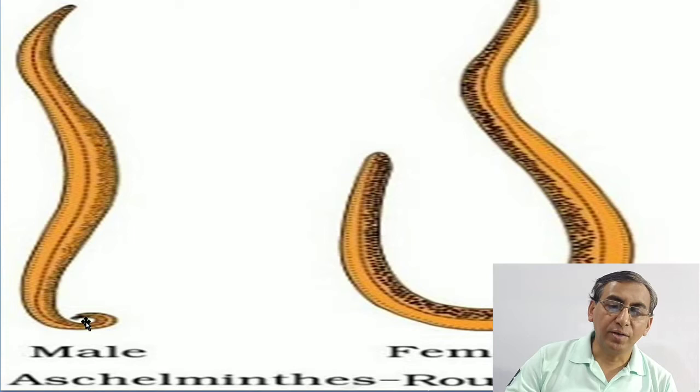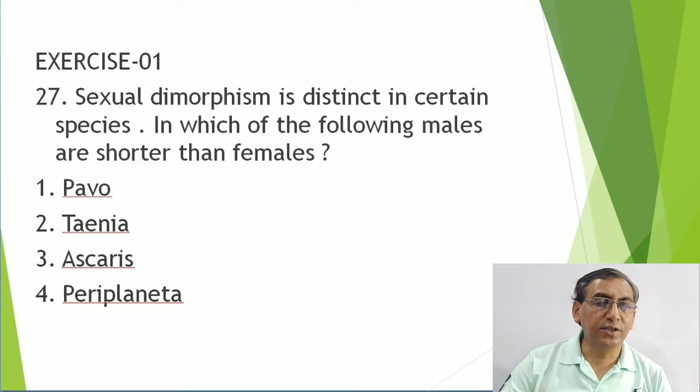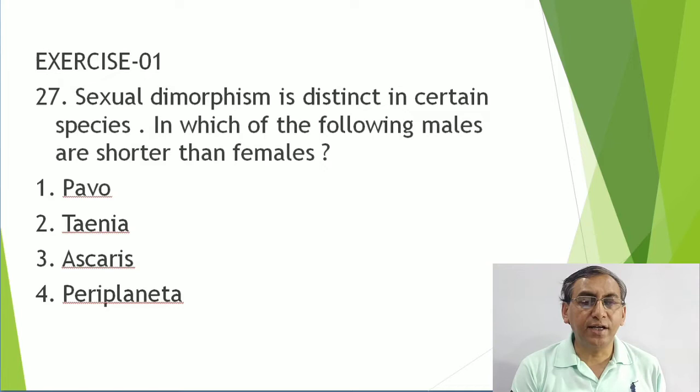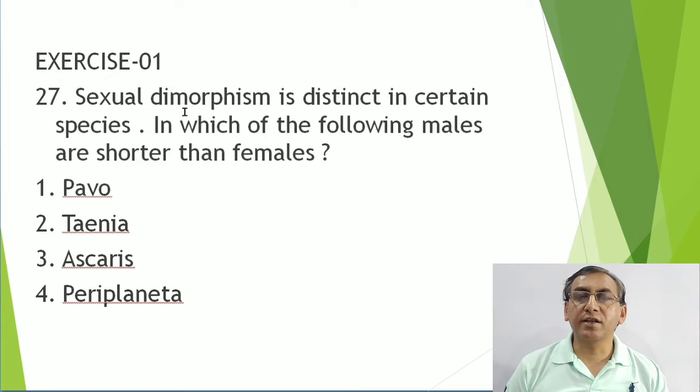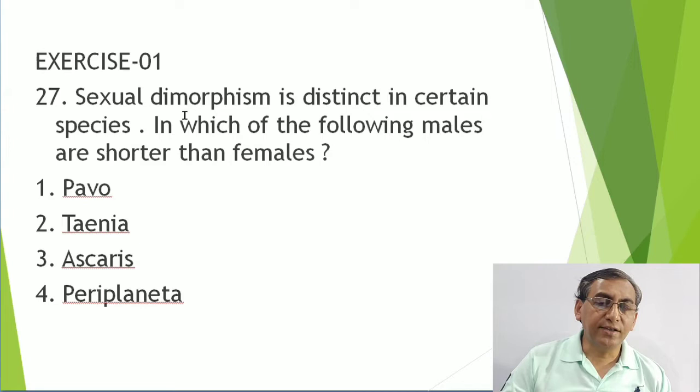Now some questions related with Ascaris. Sexual dimorphism means identification of the sex of an individual on the basis of external characters. In Ascaris, the male is short with a curved tail and the female is long with a straight tail.